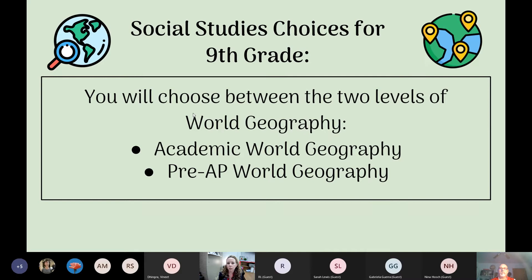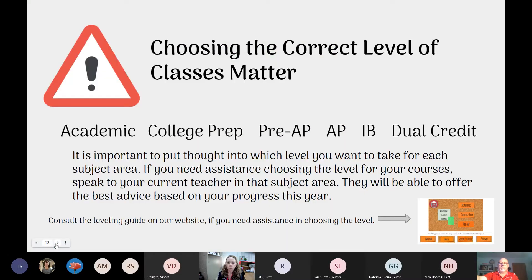For social studies in ninth grade, it's between just two levels — there's no college prep level in social studies, so it's between academic and pre-AP. Those are the four core areas. We want you to think carefully about leveling because choosing the right level really matters as far as getting your school year off to a good start.